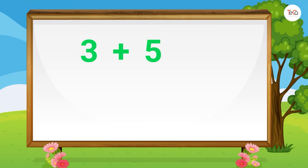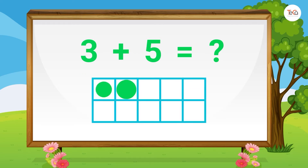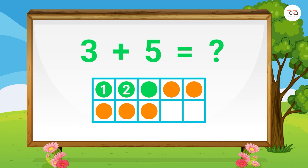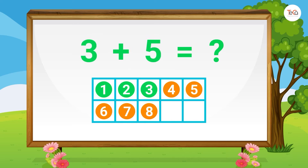Next, 3 plus 5 equals... We draw 3 dots, then 5 dots. Here we have 1, 2, 3, 4, 5, 6, 7, 8. So 3 plus 5 equals 8.